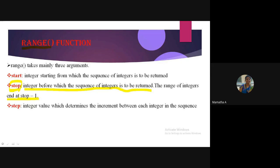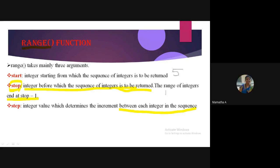The third argument is 'step' — an integer value that determines the increment between each integer. For example, to generate 5, 6, 7, 8, 9, 10: start is 5, stop is 11, and step is 1, meaning each number increments by 1.